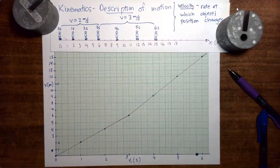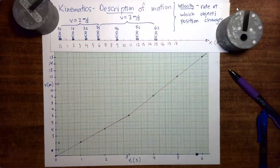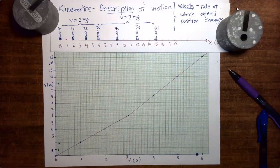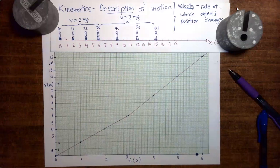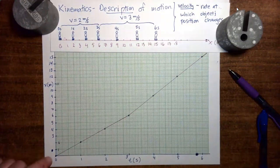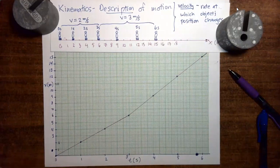How can we quantify this? How about we actually calculate the slope of the plot between 0 seconds and 3 seconds, and then calculate the slope of the plot between 3 seconds and 6 seconds, and see what we get? So to calculate the slope of the plot from 0 seconds to 3 seconds, let's use a slope triangle.